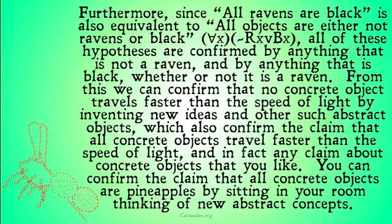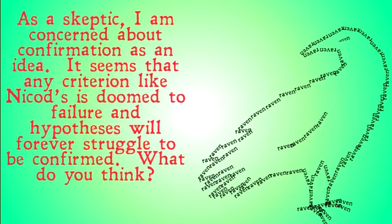This is a huge problem for the idea that by doing a test over and over again you can confirm some hypothesis. Just because you find 10,000 ravens that are black, it doesn't in any way confirm the statement that all ravens are black — because you could have equally found 10,000 things that are not ravens and claimed with the same logical stability that you have proven all ravens are black. This seems to be quite a significant problem for anyone who believes that particular instances of a law in some way confirm that law.